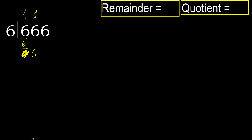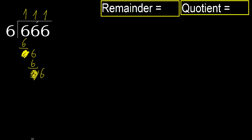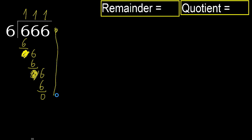6 multiplied by 1 is 6. Subtract. Next, bring down 6. Again, 6 multiplied by 1 is 6. Subtract. Next — there is no more number.